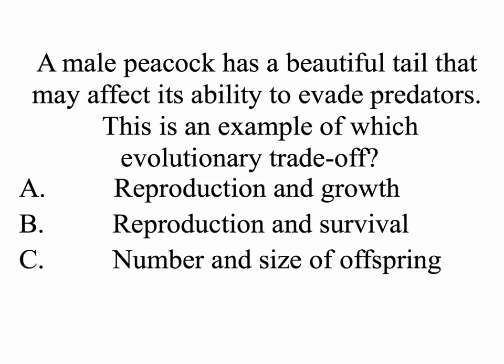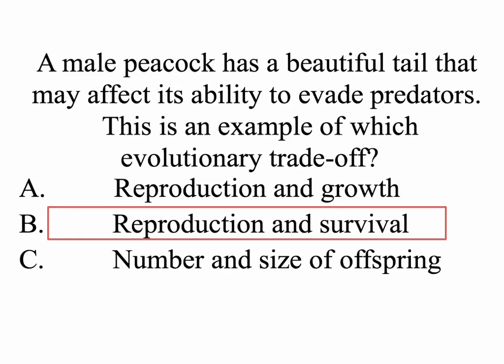Here's a practice question. Peacocks use their beautiful tails to attract mates. However, this beautiful tail affects its ability to evade predators. This is an example of which kind of evolutionary trade-off? The correct answer is reproduction and survival. The bigger and prettier the tail is, the more times this male will get to reproduce. However, the bigger and prettier the male is, the harder time he has surviving — it makes him more visible to predators. So he has to balance his energy between reproducing and expending energy to evade predators.